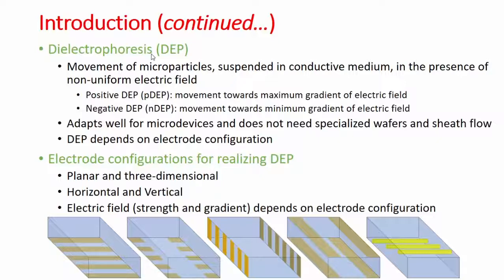One important thing about DEP is that it depends on the electric field and the electrode configuration — specifically the type of electrode configuration you have to achieve the high electric field needed. People have looked at different types of electrode configurations. The first has all electrodes on the bottom as interdigitated electrodes, with alternating polarities. You can also have vertical electrodes, planar electrodes, three-dimensional electrodes, electrodes on the top and bottom surface, and so on. People have developed all sorts of electrode types for microfluidic applications.